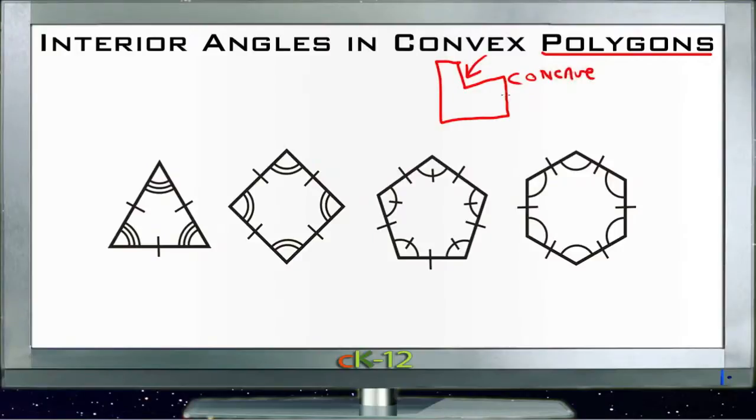This is a concave polygon and we're not talking about concave polygons, we're talking just about convex polygons. So convex polygons only sort of bump out. And the interior angles in convex polygons are actually pretty easy to calculate.